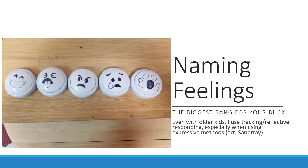Naming feelings is the biggest bang for your buck. Even with older kids I'm not doing play therapy with, I use that tracking and reflective responding — especially during expressive arts or sand tray — because what kids are doing is sometimes even more important than what they're saying. I have little push-button lights in my office with emoji faces drawn in Sharpie, and kids can touch them to show what emotions they're feeling. It's great for starting conversations about feeling multiple emotions at once.